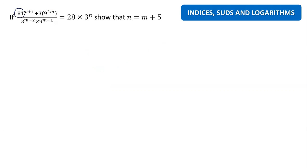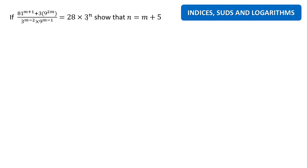Here we have 81, 3, and 9. What I can see is we can change everything to base 3. I advise my students to go for the lowest base — the lowest is better. For example, 81 can also be changed to 9 squared, but it's better to change everything to base 3.